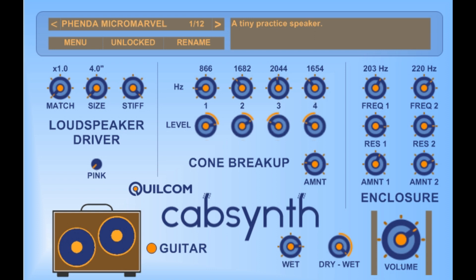So the cabsynth takes a different approach. It's a cabinet synthesizer. This means that you have all sorts of parameters to control various aspects of the loudspeaker driver unit, the cone break-up and resonances or formants in the enclosure itself. That means you can hopefully maybe find a tone that's uniquely yours.